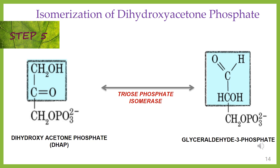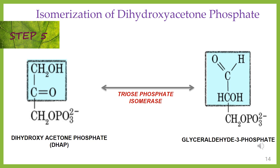Step 5: isomerization of dihydroxyacetone phosphate. Triose phosphate isomerase is an enzyme which converts dihydroxyacetone phosphate into glyceraldehyde-3-phosphate. These act as a substrate in successive steps of glycolysis.